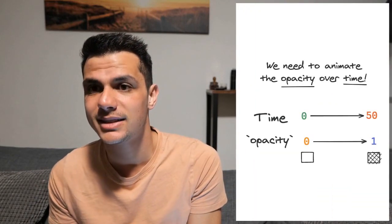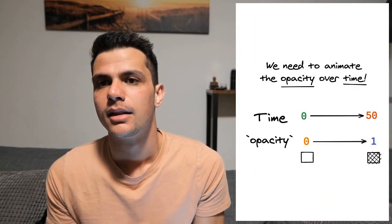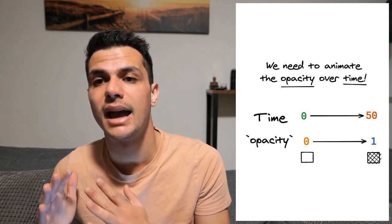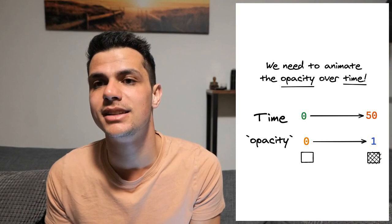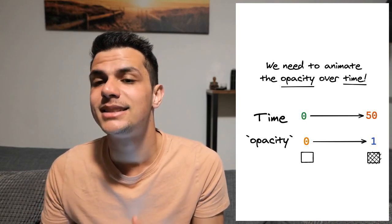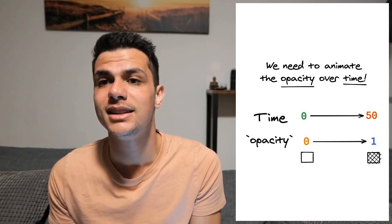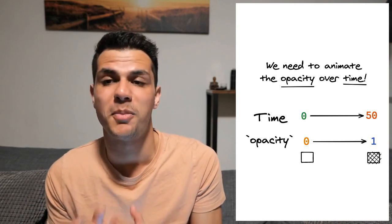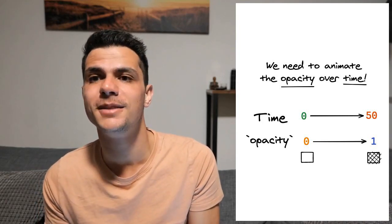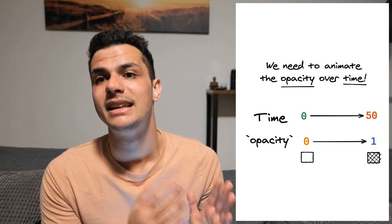Let's say we want to create a fade-in animation. For that, we need to change the opacity over time. For the sake of this example, let's say the duration of our animation is 50 frames — at frame 0 the opacity is 0, and at frame 50 the opacity is 1.